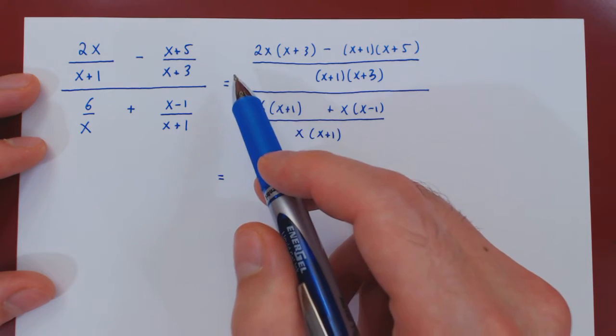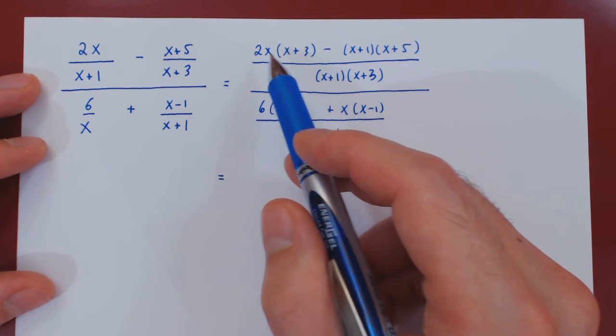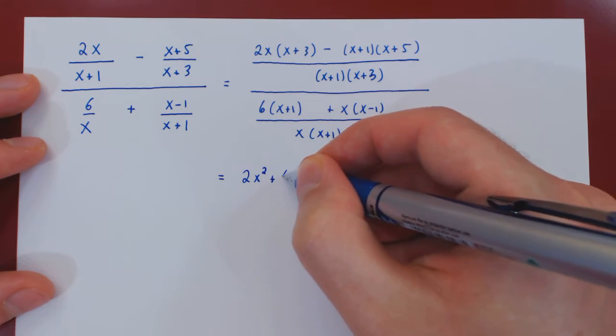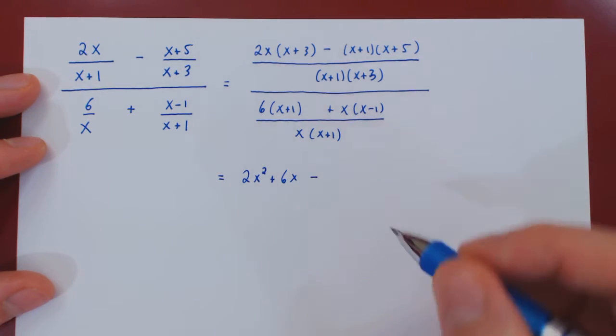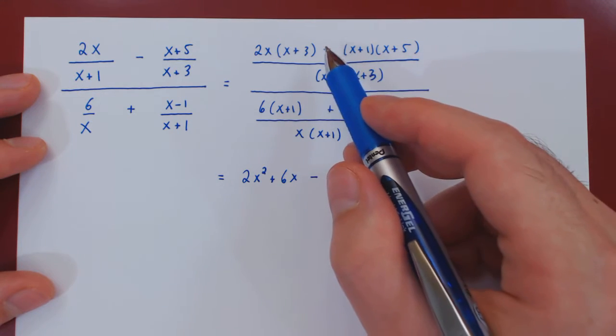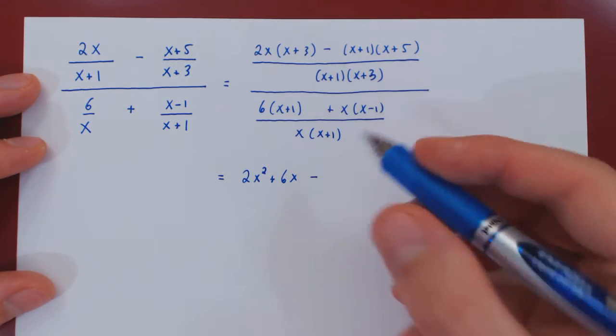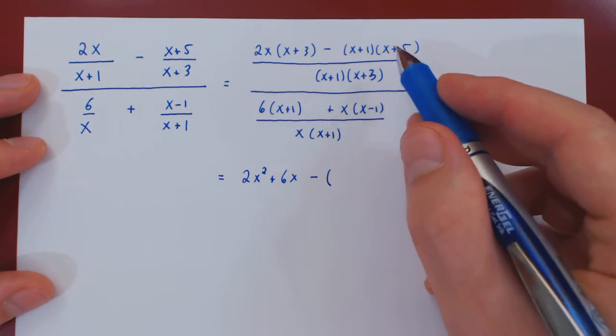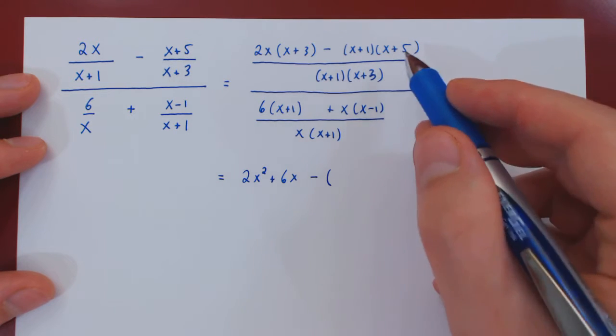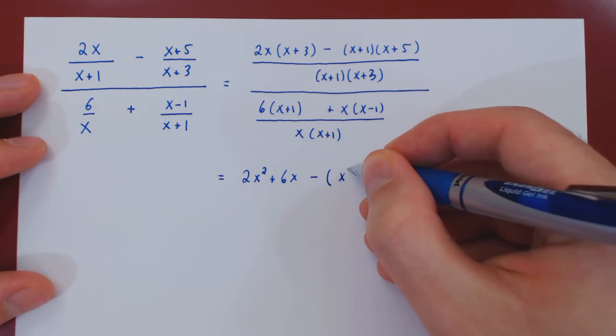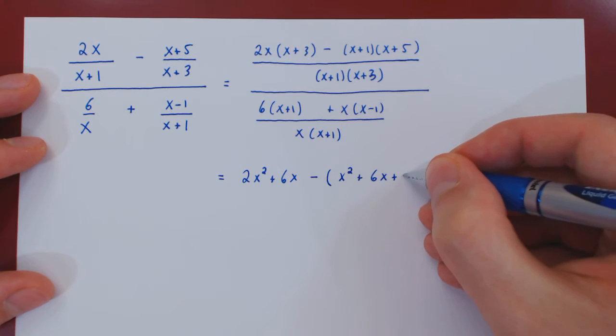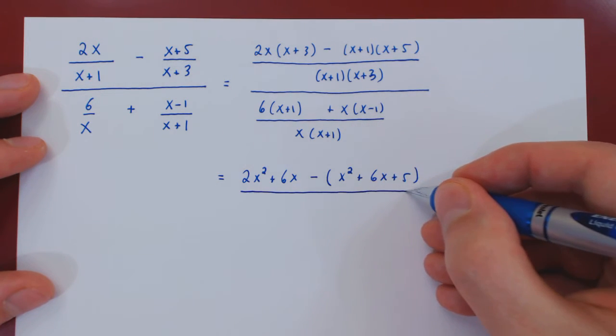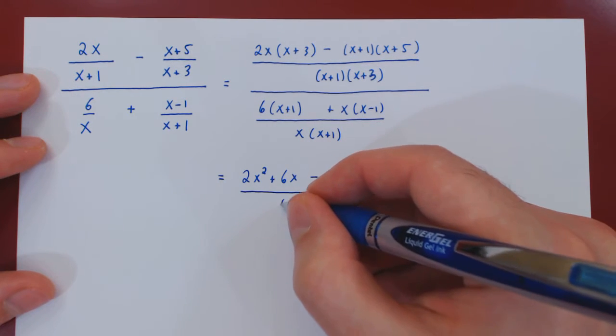So, what do we have here, well, on top we have 2x² + 6x minus, and again, be careful here, the negative applies to the entire product, so we have to open up a pair of brackets, and we'll get x² + 5x + x + 6x + 5. So, x² + 6x + 5 over, again, (x + 1) times (x + 3).